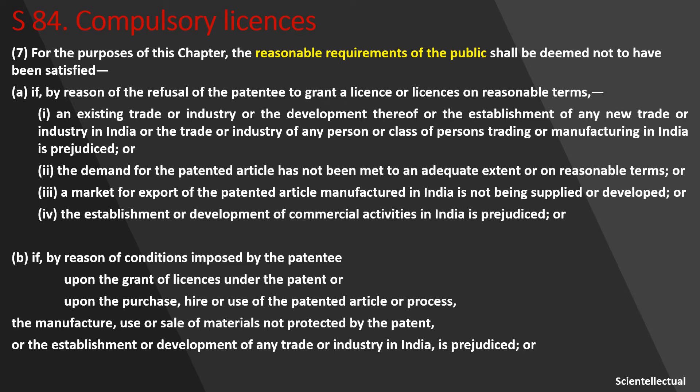If, by reason of conditions imposed by the patentee upon the grant of a license under the patent, or upon the purchase, hire, or use of the patented article or process, the manufacture, use, or sale of materials not protected by the patent, or the establishment or development of any trade or industry in India is prejudiced — that is, the patentee can give terms and conditions on what is under the patent protection, but he cannot impose any terms and conditions on the unprotected part in the license. And if he does so, and for that, the establishment or development of trade or industry in India is prejudiced, then the reasonable requirement of the public will not be satisfied.